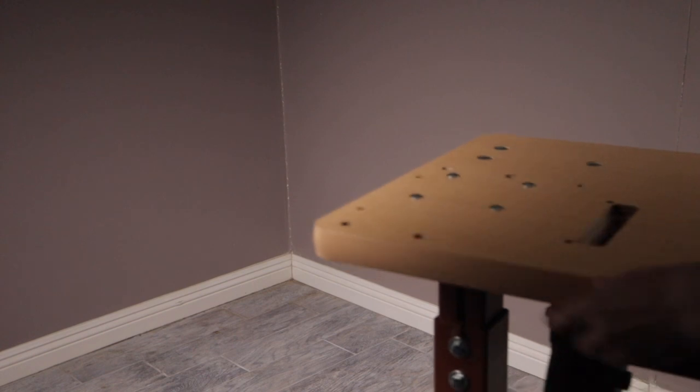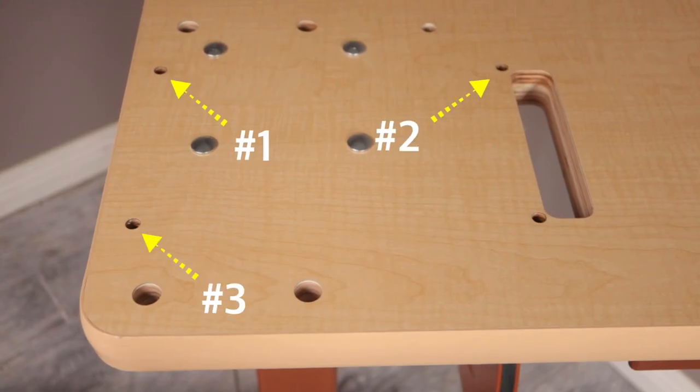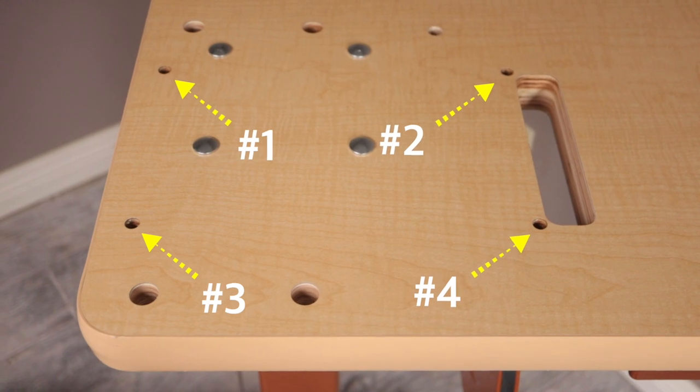After you install the casters to the base, take a close look at the tabletop. There are four small holes and these are the mounting holes for the machine head.